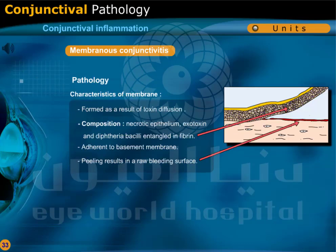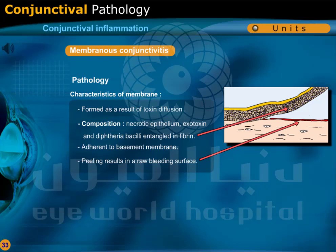Characteristics of the membrane: it is formed as a result of toxin diffusion. It is composed of necrotic epithelium, exotoxin, and diphtheria bacilli entangled in fibrin. It is adherent to the basement membrane, and peeling results in a raw bleeding surface.